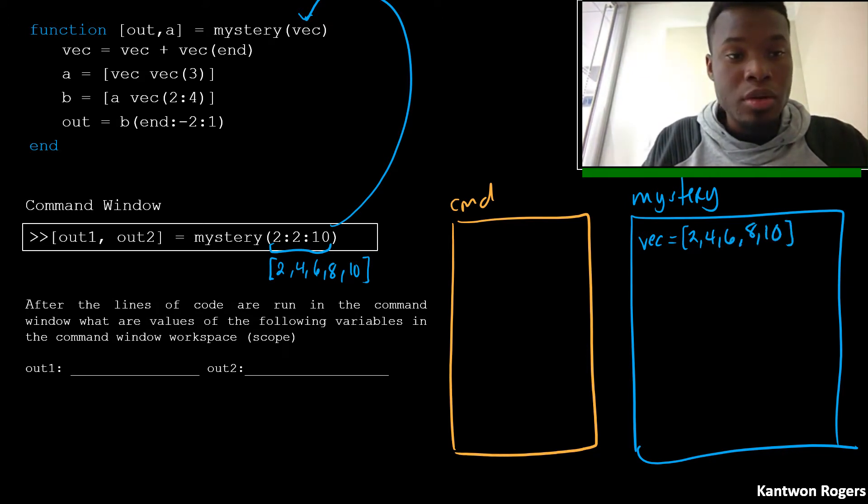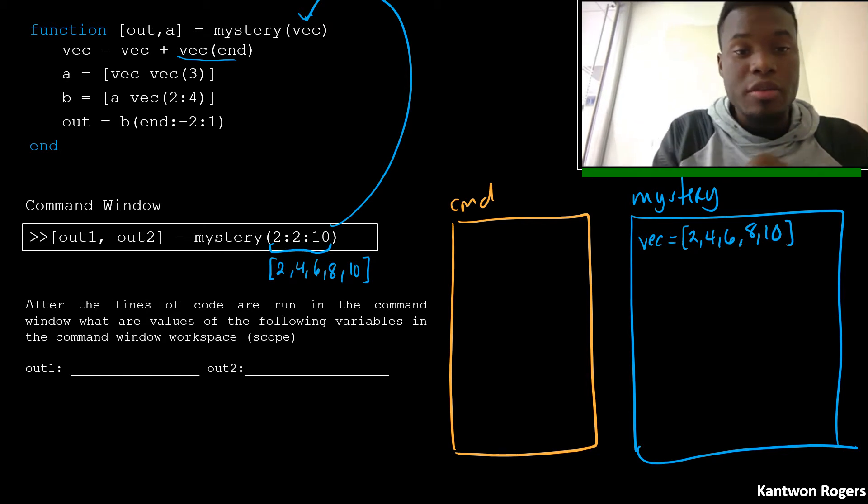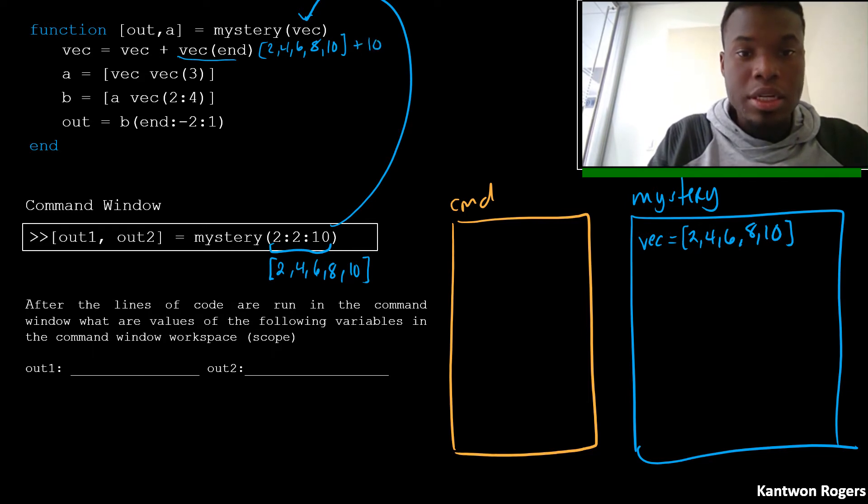Then on our next line of code, we read the right-hand side of the assignment operator first. And it has our current vec, which is 2, 4, 6, 8, 10, plus vec at end. So vec at end, that second part here, is indexing the last element, which is 10, and adding it to our vector. So this line of code translates to 2, 4, 6, 8, 10, plus 10.